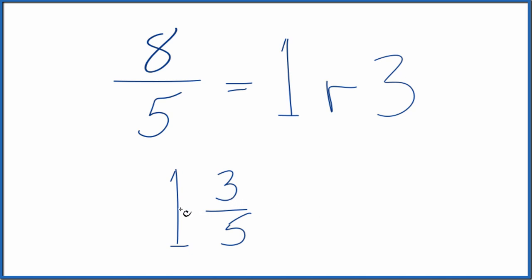You can check that because 1 times 5, that's 5. 5 plus 3, that gives you 8. We bring the denominator across, and we have what we started with.